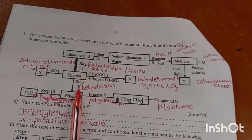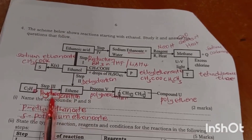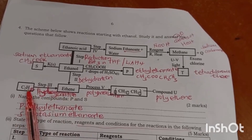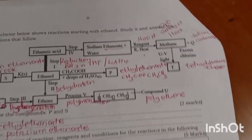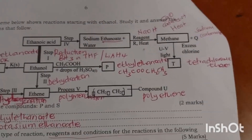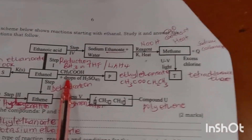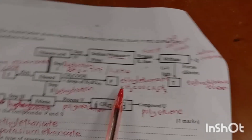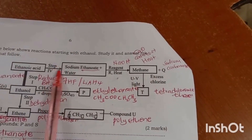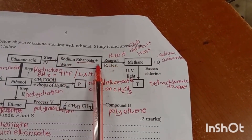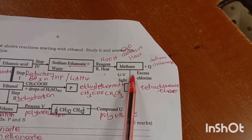When you dehydrate ethanol you get ethene. When you hydrogenate ethene you get ethane. When you polymerize ethene you get polythene. When you react ethanol with ethanoic acid and a few drops of concentrated sulfuric acid you get ethyl ethanoate.